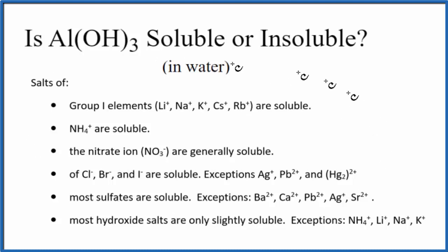We could look at the solubility rules here, and as we go down our rules, most hydroxide salts, this OH, that's a hydroxide when it's bonded to a metal. So we have an ionic compound, this is a hydroxide salt. They're only slightly soluble, with a few exceptions. Aluminum is not an exception, so we would expect aluminum hydroxide to be slightly soluble in water.